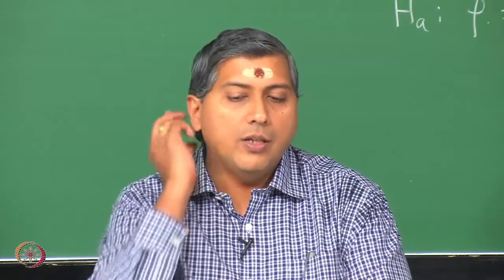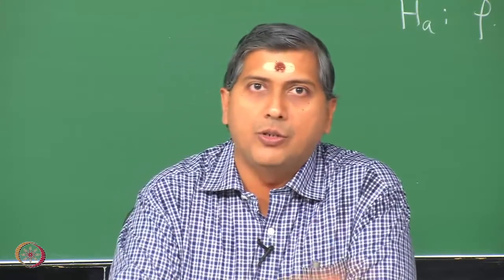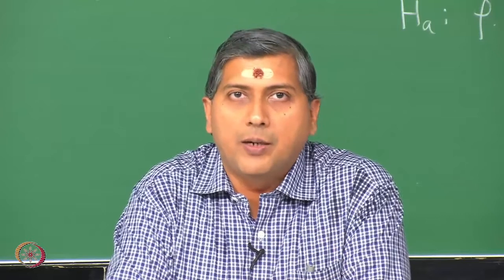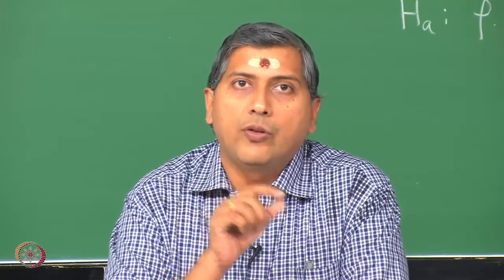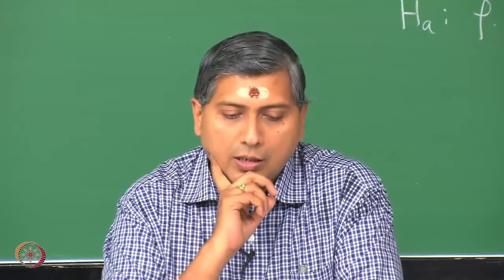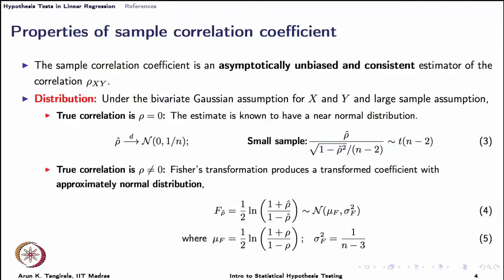Having that assurance is necessary for us to conduct a hypothesis test or use this estimator to test correlations. Now let us move on to the distributional property. When X and Y have a joint Gaussian distribution — a bivariate Gaussian distribution — as we discussed in an earlier lecture when we talked about the difference between correlation and independence, when X and Y have a bivariate Gaussian distribution, when the sample size is large, and when the true correlation is 0, a nice result falls out.